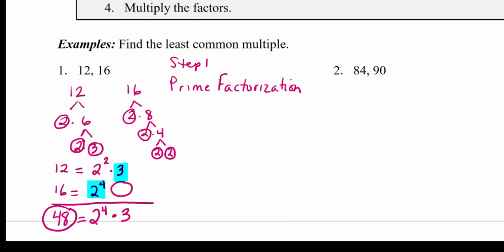Now we calculate: 2 to the 4th is 16, and 16 times 3 is 48. So 48 is our least common multiple — the smallest number that both 12 and 16 divide into evenly. 48 divided by 12 is 4, and 48 divided by 16 is 3. That's the least common multiple.